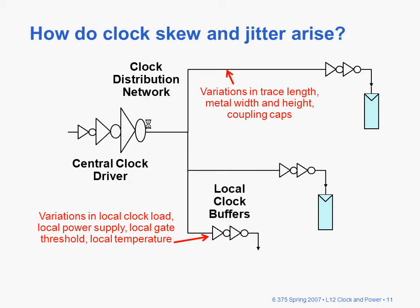How do those two things arise? It's pretty clear to see how variation in skew can arise. Let's say there's a big clock buffer, and what is happening is that there are different lengths of wire out to these registers, and perhaps different numbers of buffers in the way, so certainly there can be some variation that's going to cause clock skew.